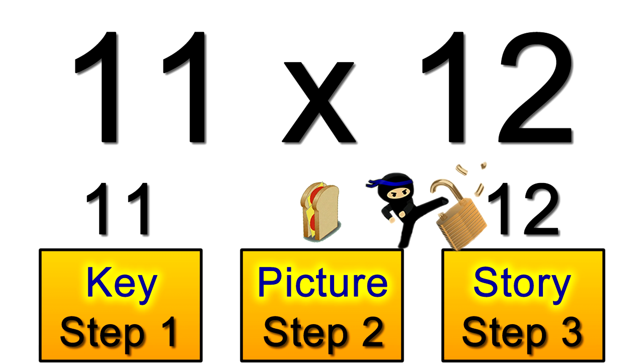For step 3 the story we run in our mind is to make a sandwich using the other part of the problem, the 12. It goes like this. We put the 1 and 2 on the slices and then for a filling we add 1 and 2 together to get 3. So we have 1, 3, 2. Our answer is 132.